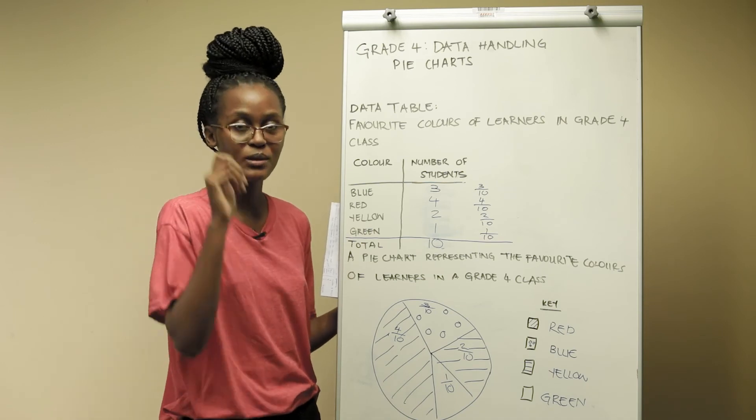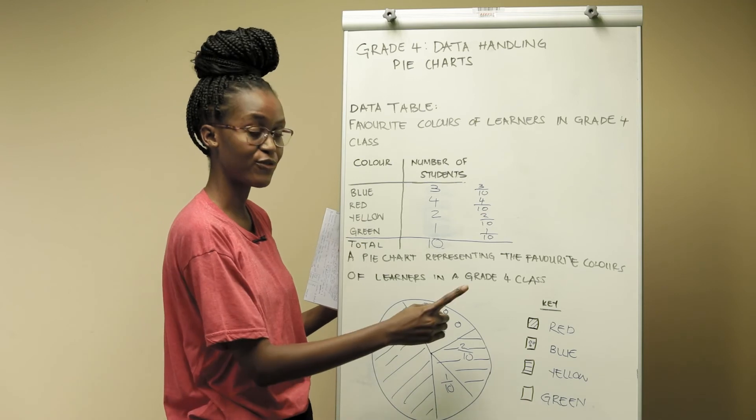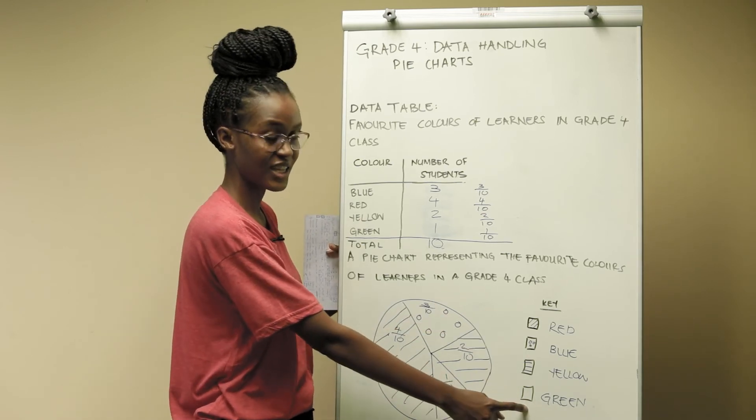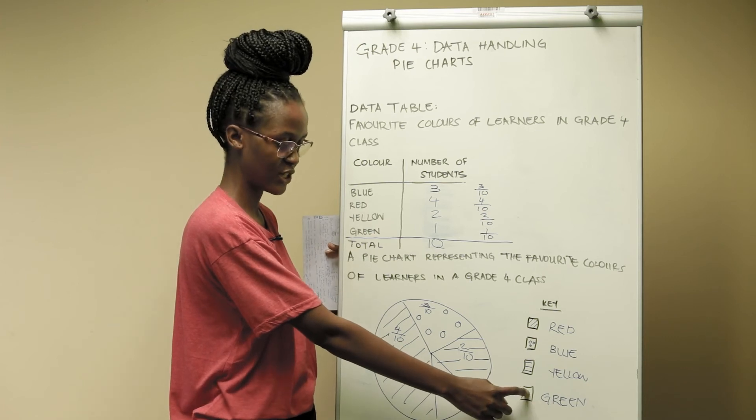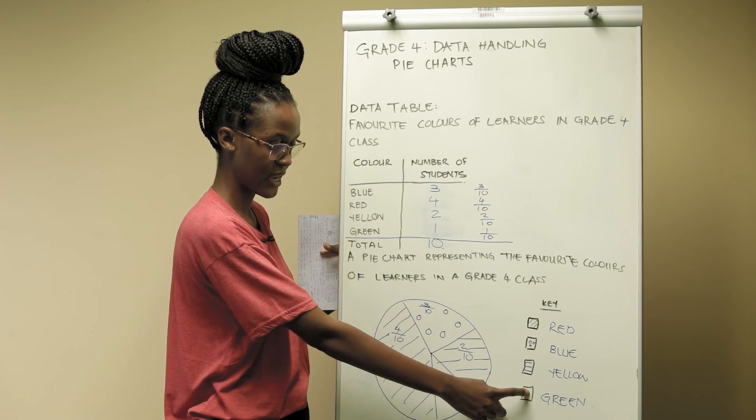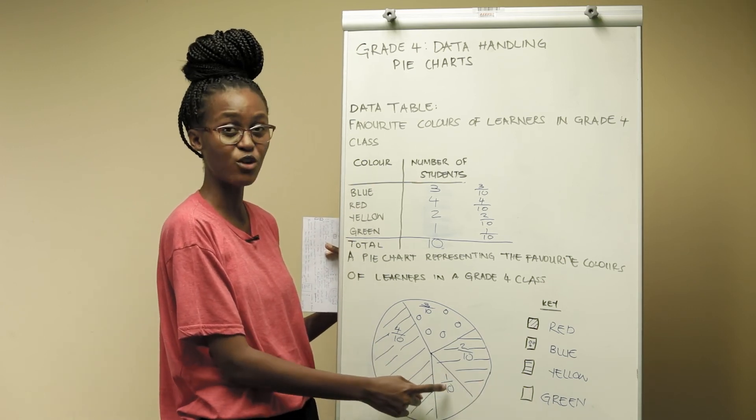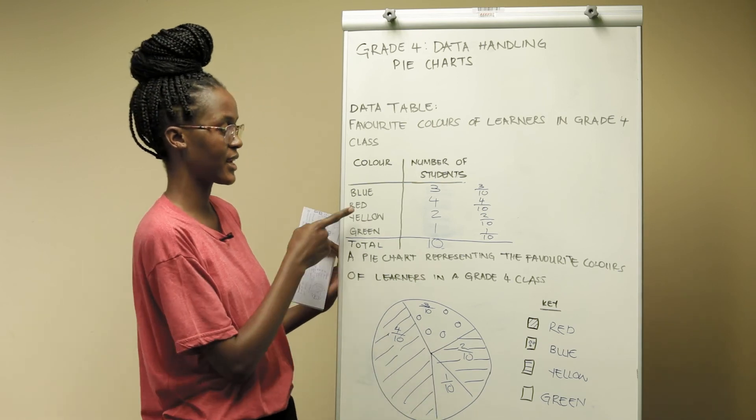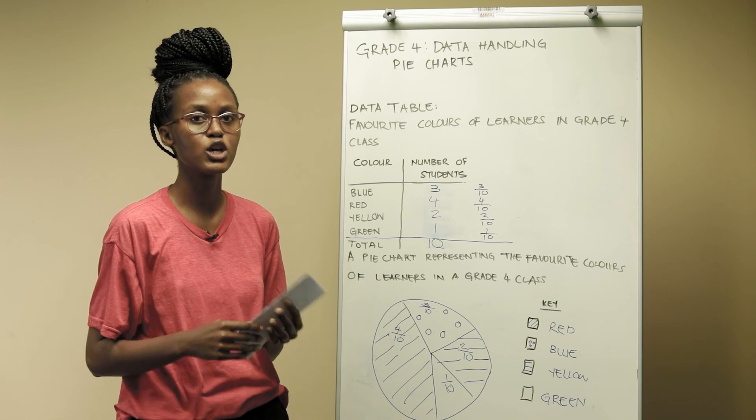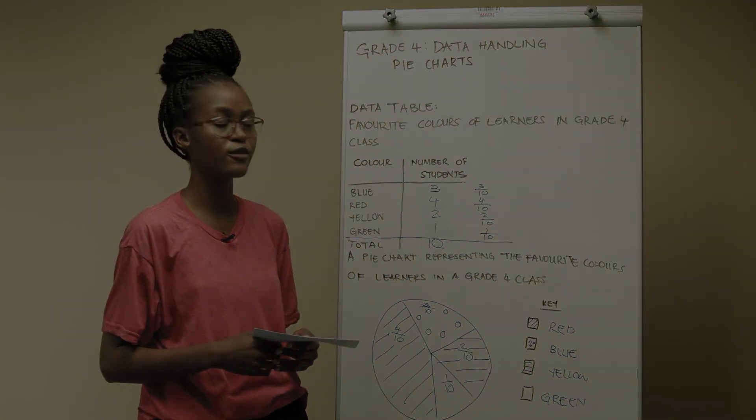Learners should be able to answer questions such as how many learners prefer the colour green. So they'll be able to go to their key and see that the colour green is indicated using the colour white or empty box and they'll be able to come to their pie chart and see that 1 out of 10 learners in the class prefer the colour green. Please also make sure that the learners use questions and examples in the learner book for practice. See you next time.